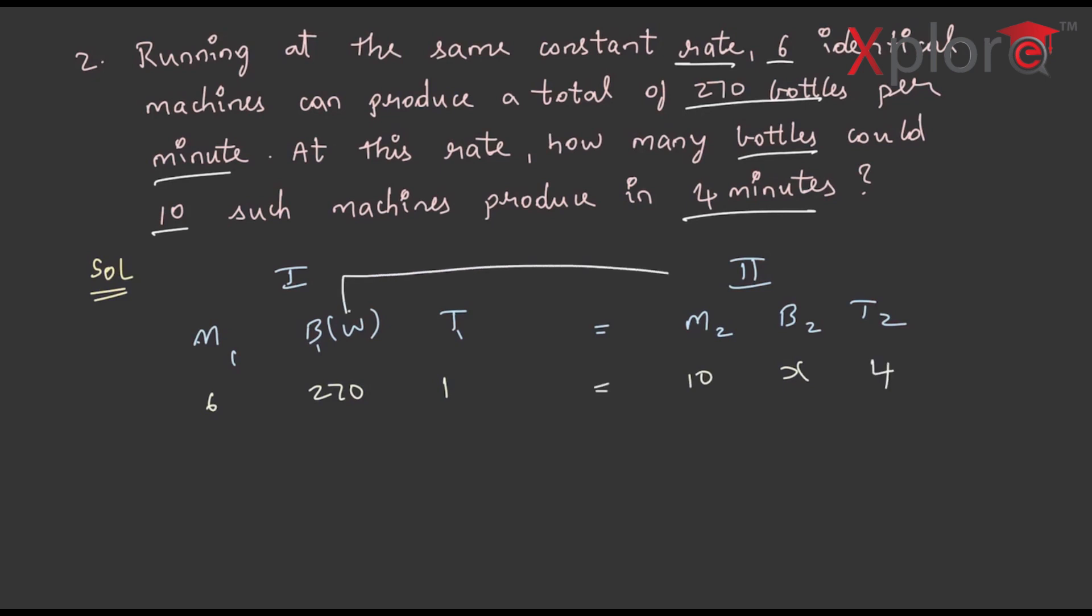So, as we all know we need to interchange the works, therefore, 6 into x into 1 is equal to 10 into 270 into 4, therefore, x is equal to 10 into 270 into 4 by 6. On simplification you will be getting 1800, so the value of x is 1800. We shall solve the category 2 questions in the next lecture, thank you.